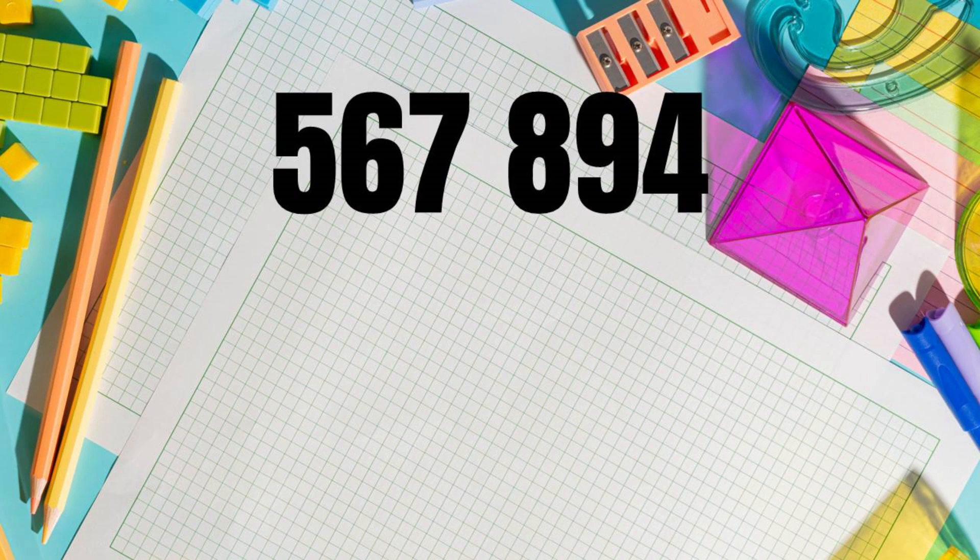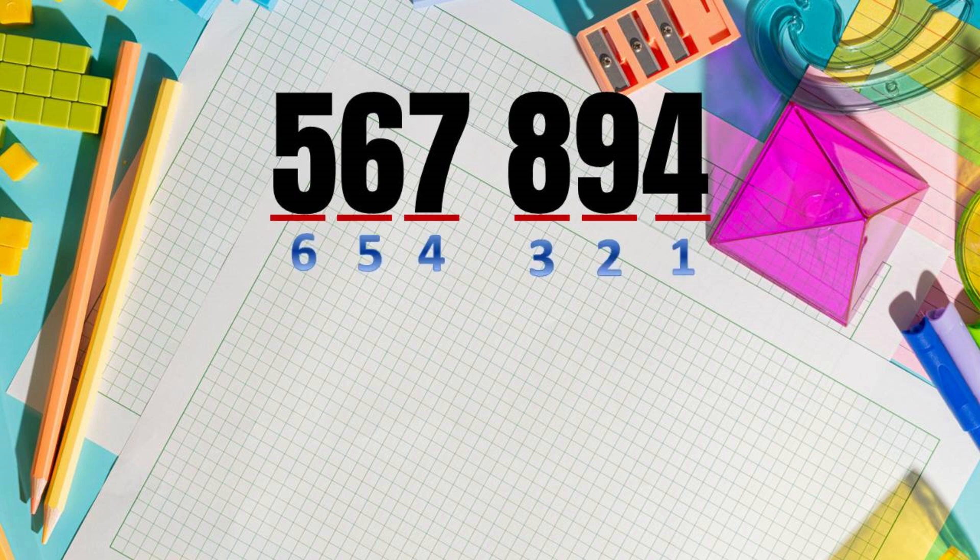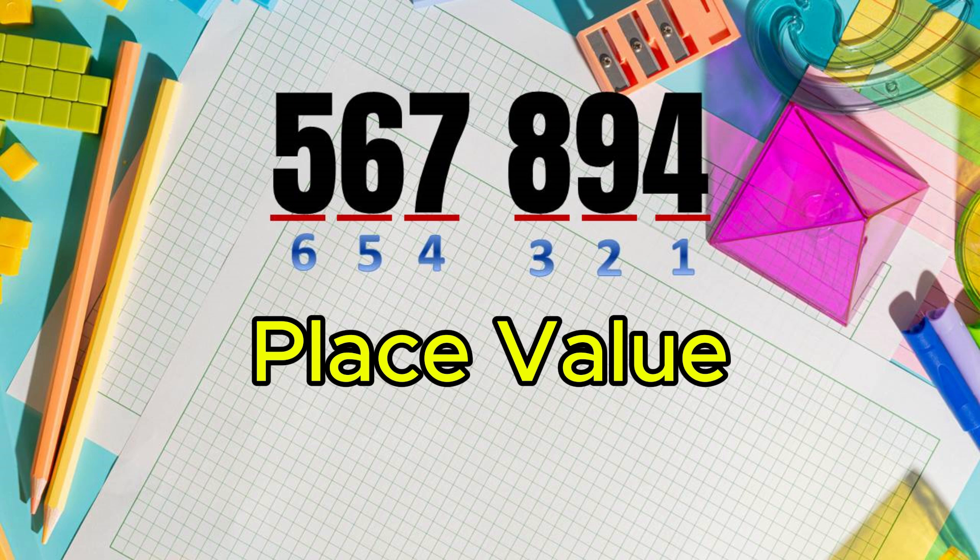Numbers such as 567,894 have 6 digits. Each digit has a different place value. What is a place value? Place value can be defined as the value represented by a digit in a number on the basis of its position in the number.